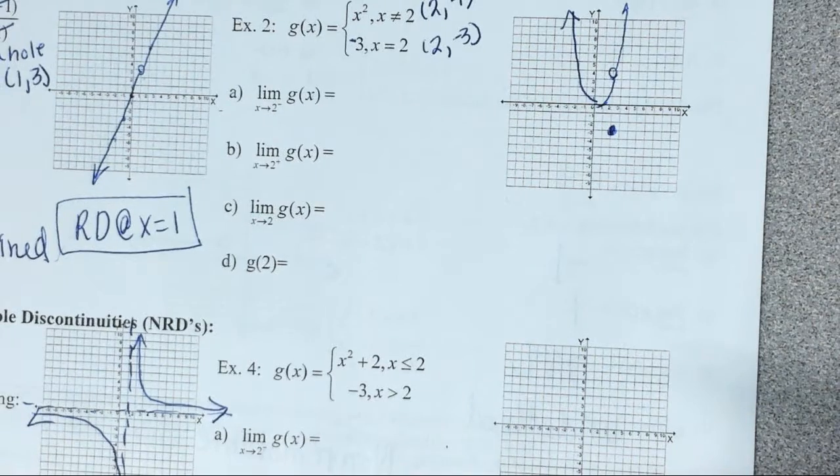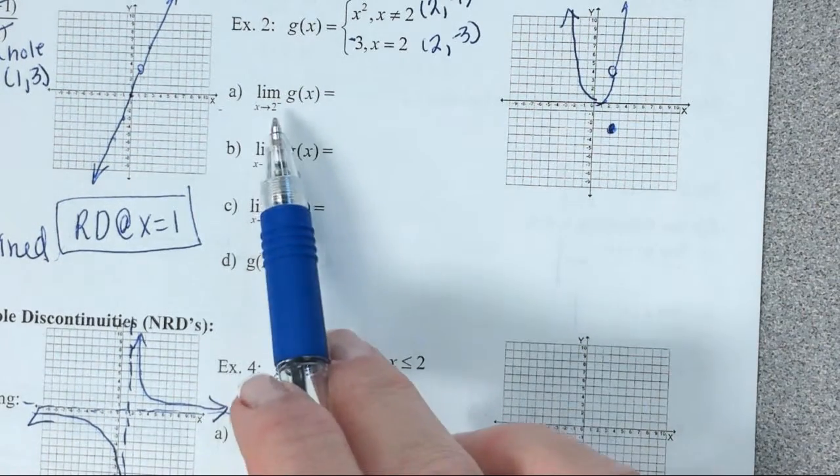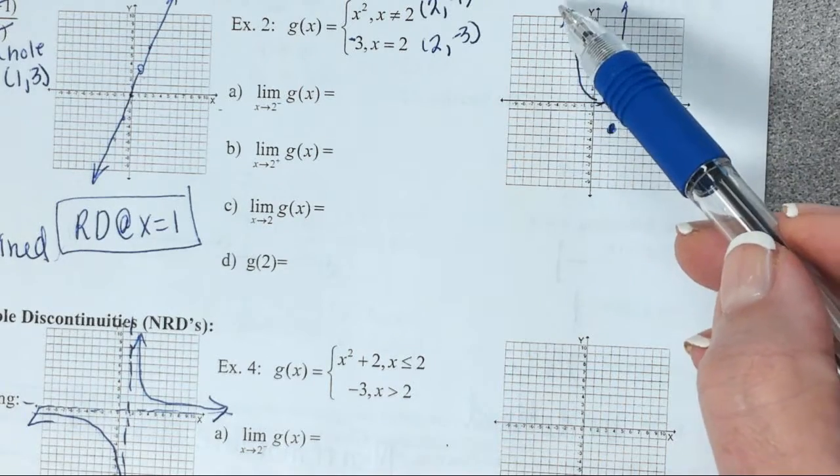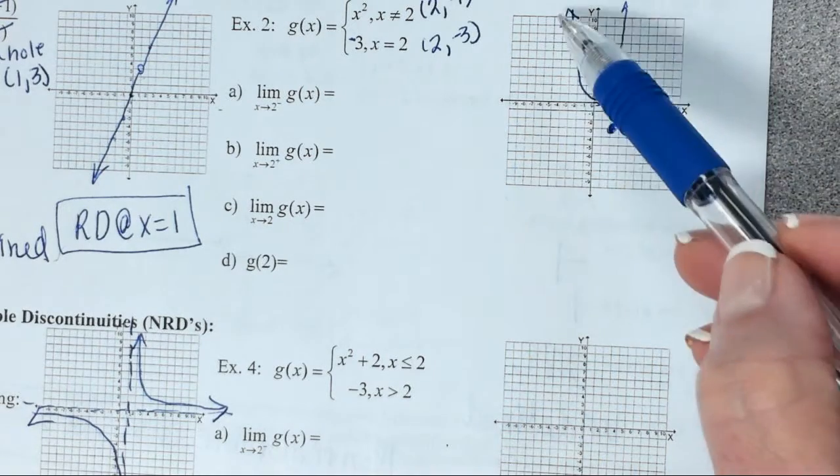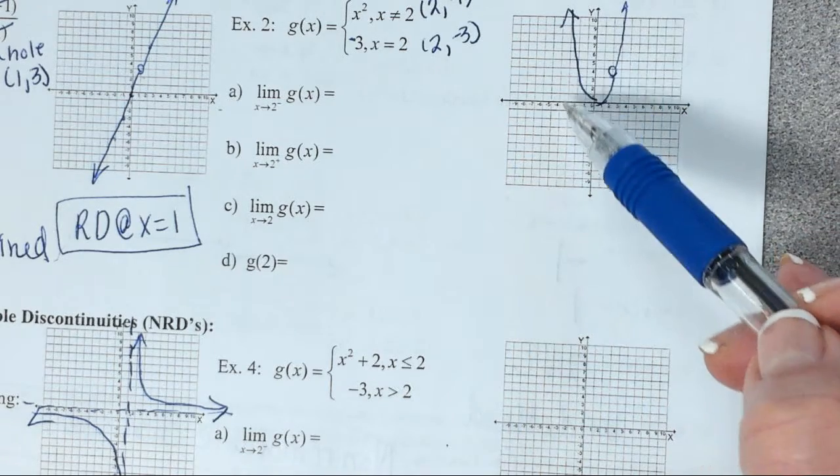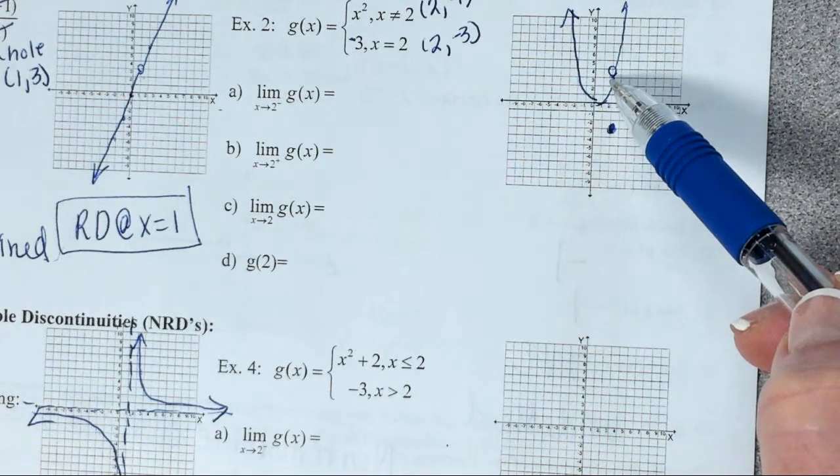So again, we've got Y equals X squared. That's a parabola. At 2, 4, we're going to have this hole in the graph. And then the point that we're actually going to have is the point 2, negative 3. So here's the way the graph looks. So now we're trying to find the limits from, first of all, from the negative side. Here's our general graph. We're looking from the negative side of 2. That means from the left-hand side of 2. Peter, what's that limit as we get closer and closer to 2 from the left side?